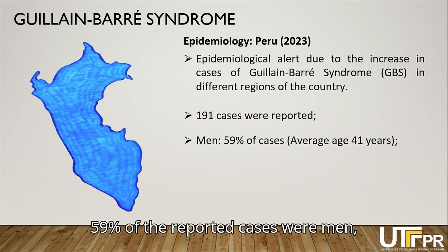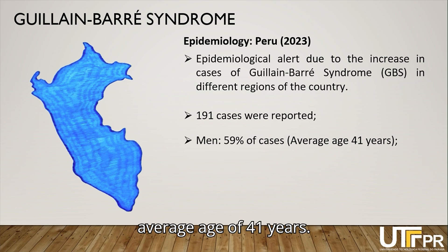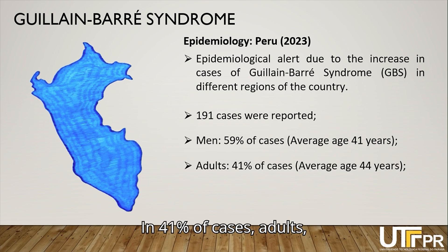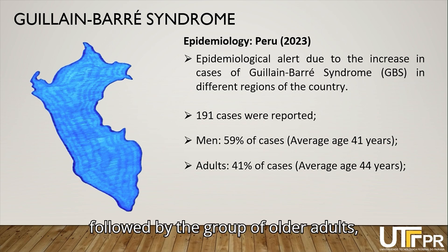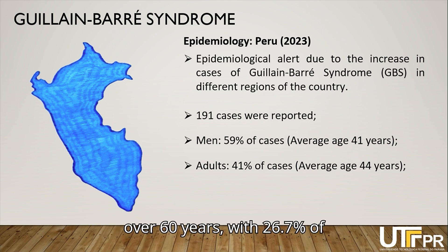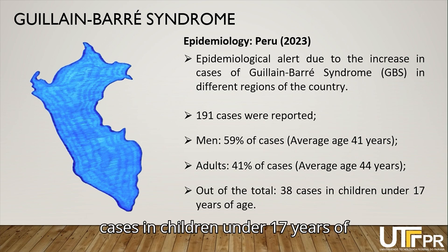Of the reported cases in Peru, 59% were men (112 cases), aged between 2 and 86 years, with an average age of 41 years. In 41% of cases, adults aged between 30 and 59 years were affected (77 cases), followed by older adults over 60 years with 26.7% of cases (51 cases). There were 38 cases in children under 17 years of age.